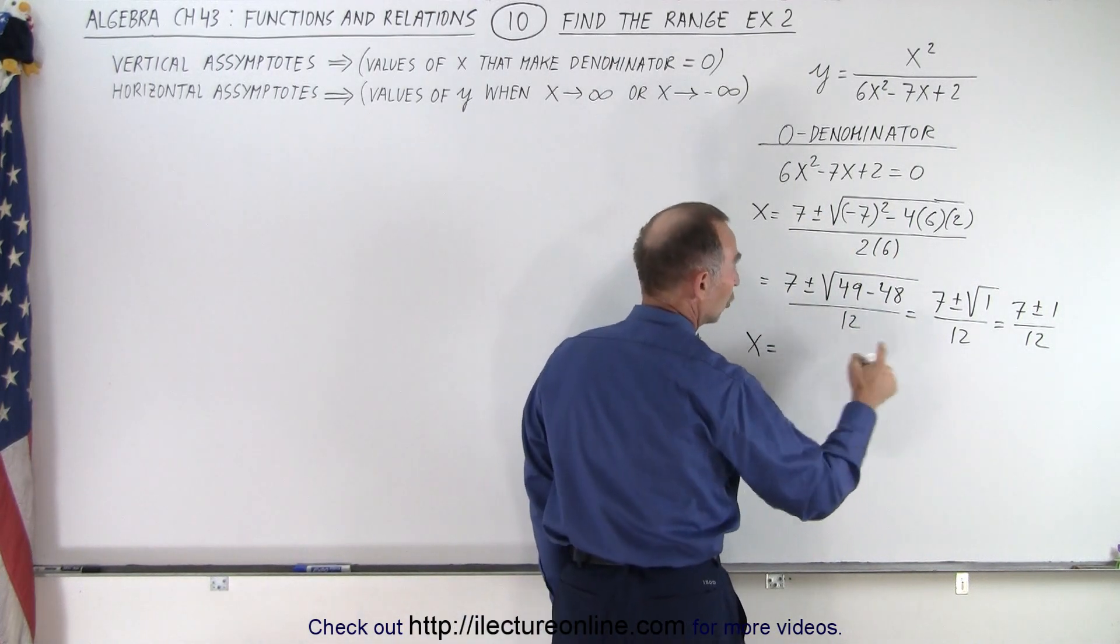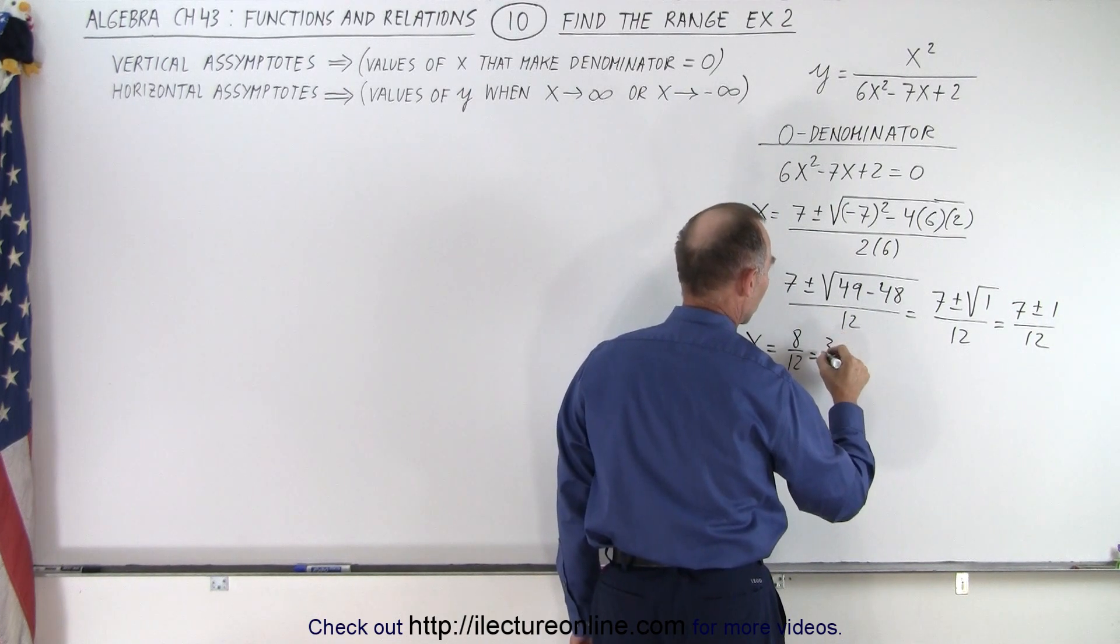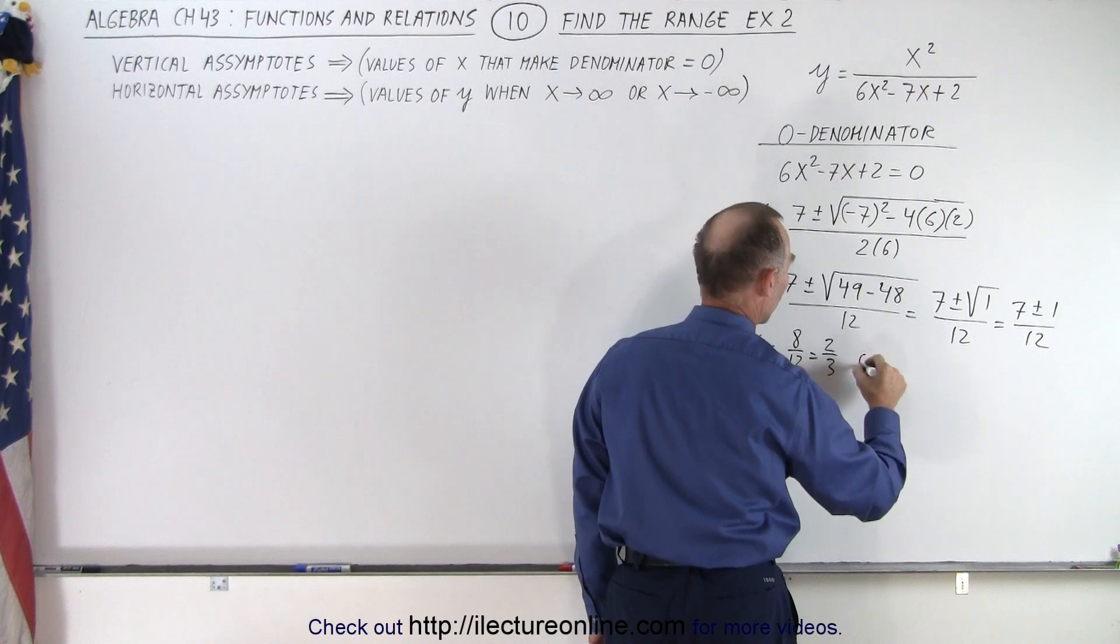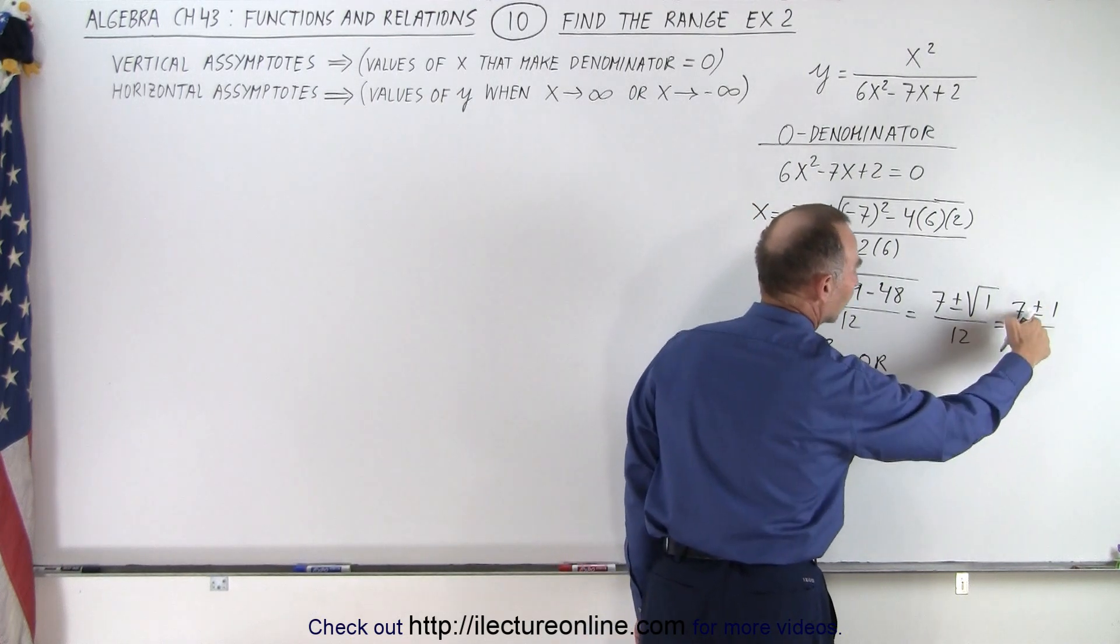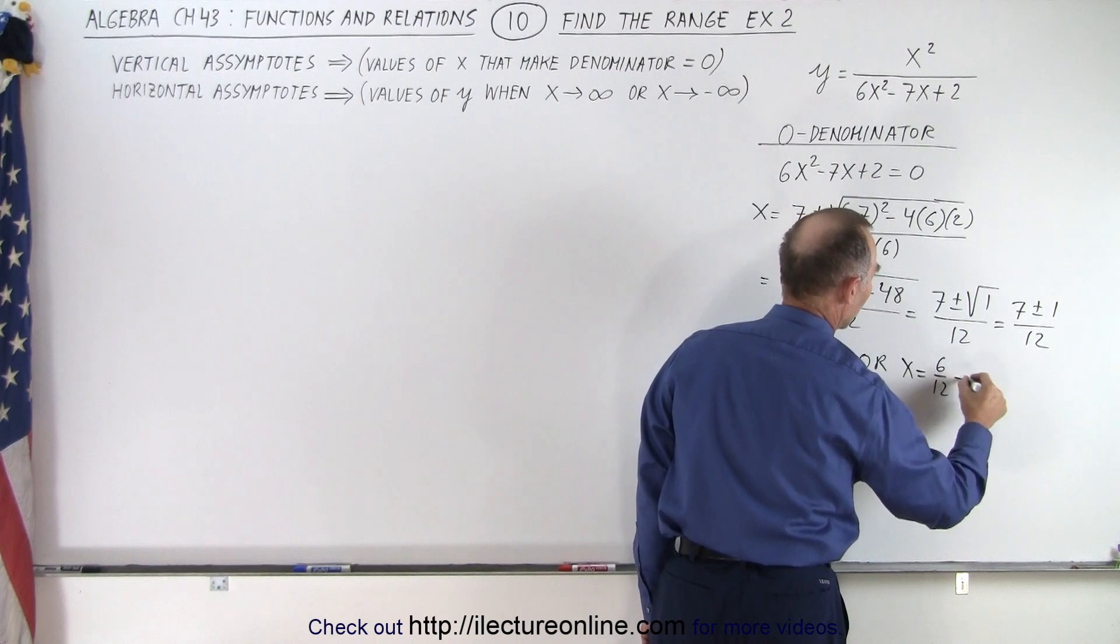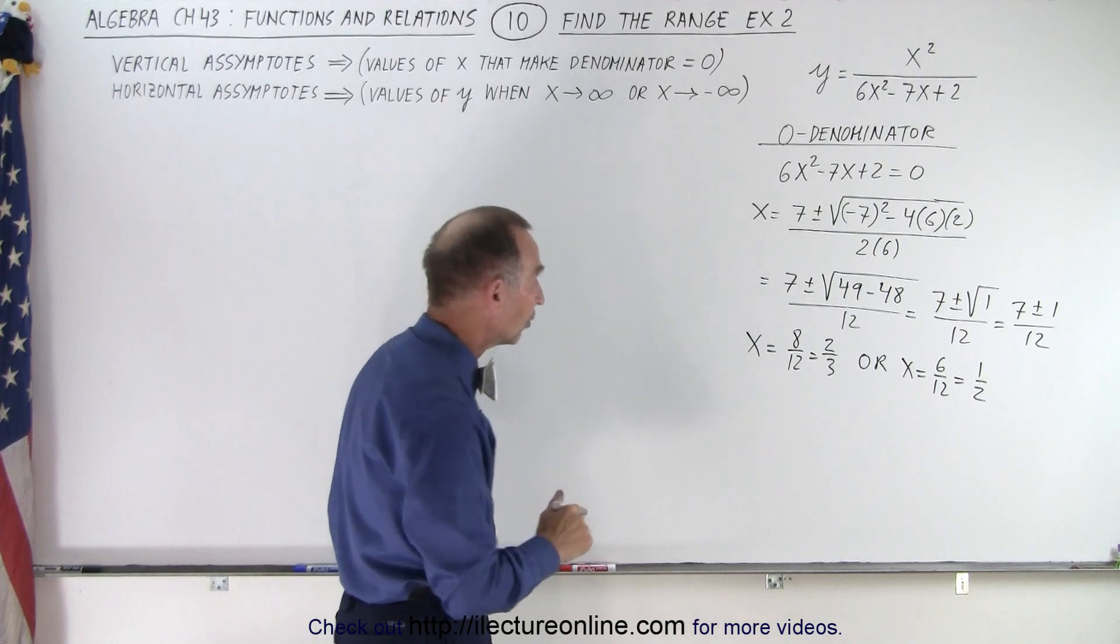x is equal to, when we add them together, that would be 8 over 12, which is two over three. Or when we subtract, 7 minus 1 over 12, so x equals 6 over 12, which is one half. So there are two values for x that make the denominator equal to zero: when x equals two thirds and when x equals one half.